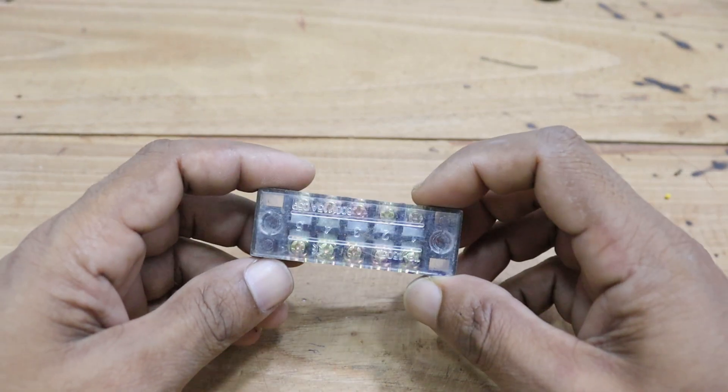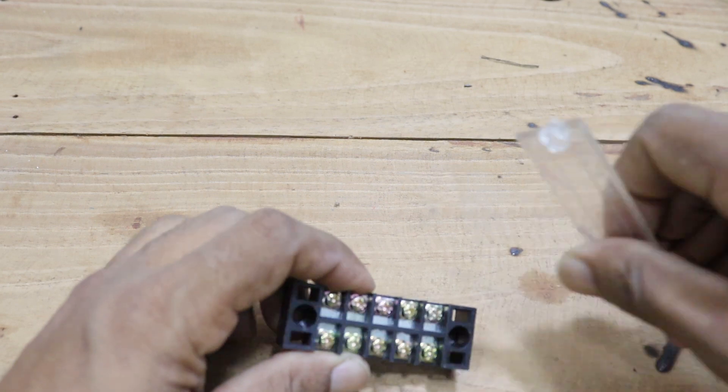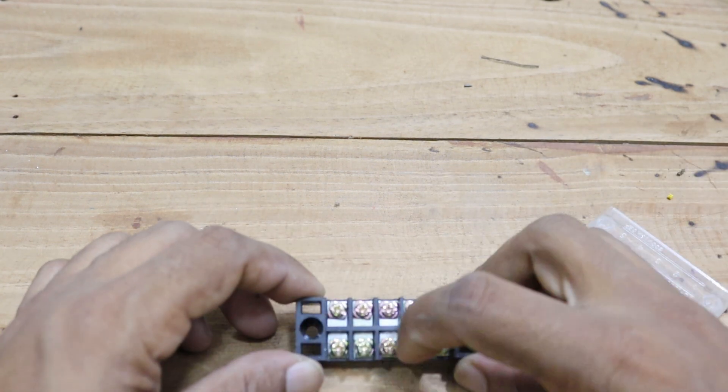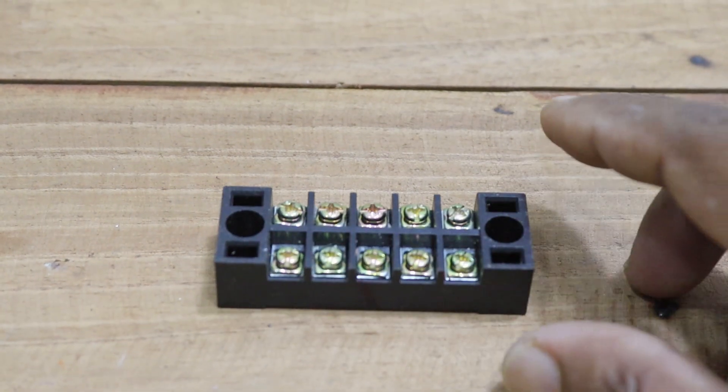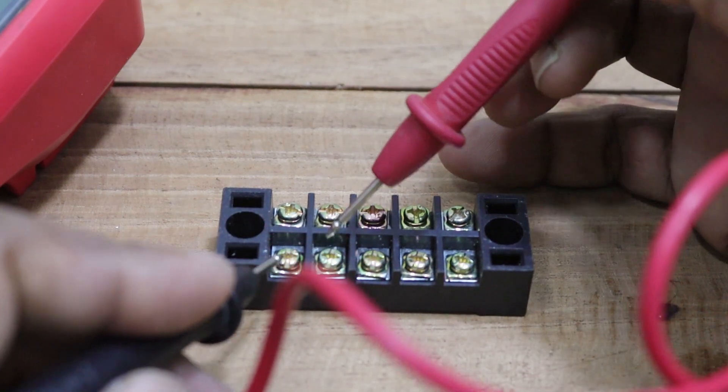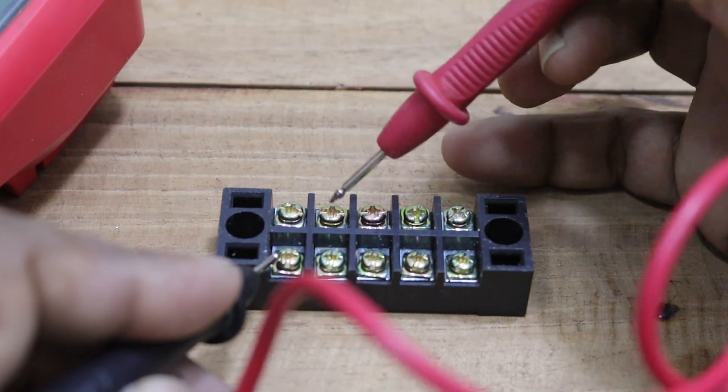Introducing the 60-piece lever wire connector set, designed to simplify your electrical projects. This set includes connectors with 2, 3, and 5 pins, offering versatility for various wiring needs. Each connector is crafted from high-quality materials, ensuring durability and a secure connection.